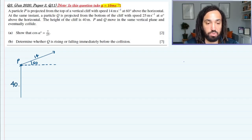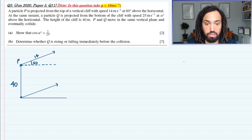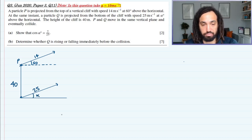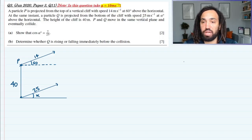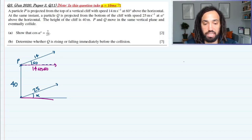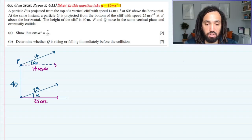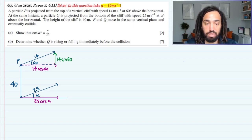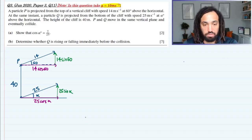So let's just draw a cliff face like that. The cliff is 40 meters, and then Q is being projected from the bottom of the cliff face at a speed of 25 and an angle of alpha. What I might do as well is put on the components of the velocity. So the horizontal component here is 14 cos 60, and the horizontal component here is 25 cos alpha. The vertical component will be 14 sin 60, and for this one it will be 25 sin alpha.